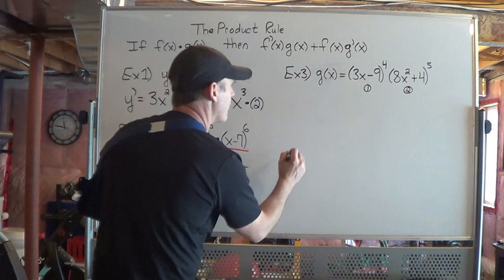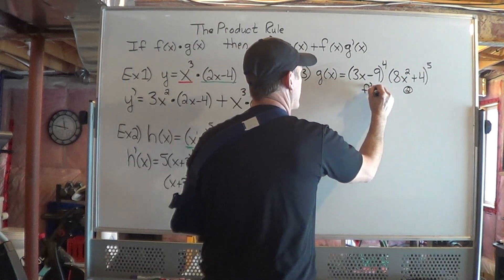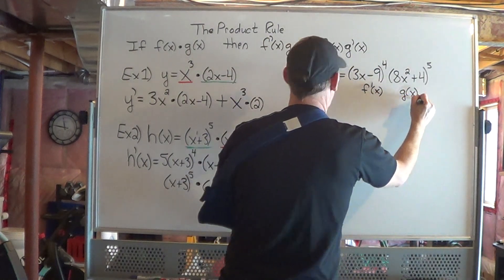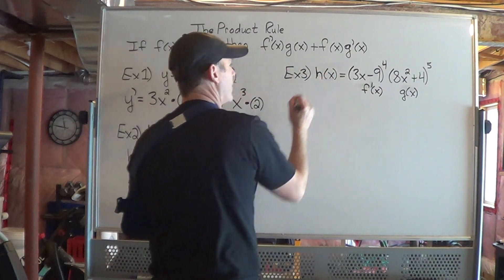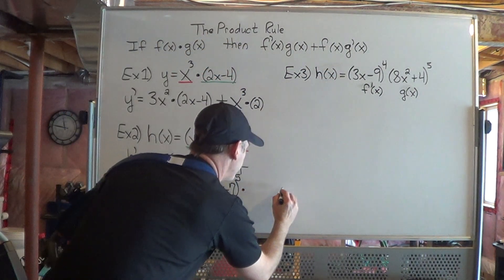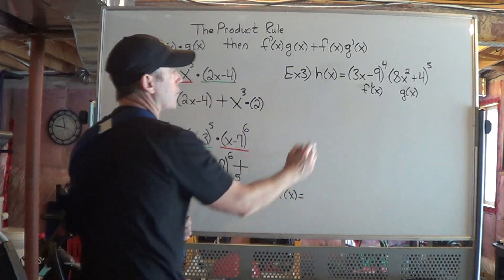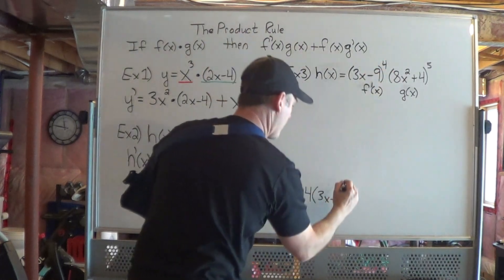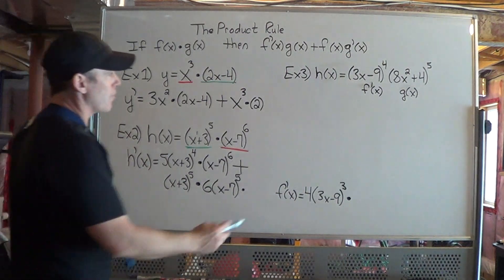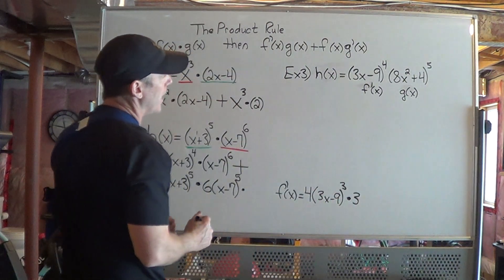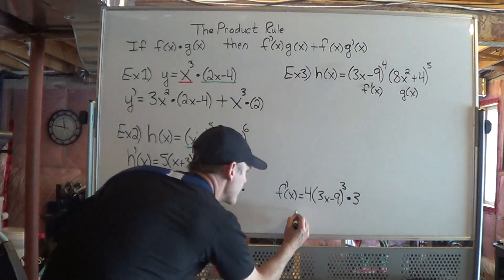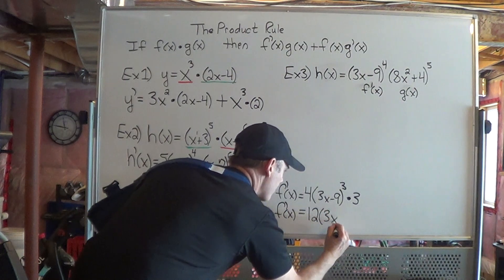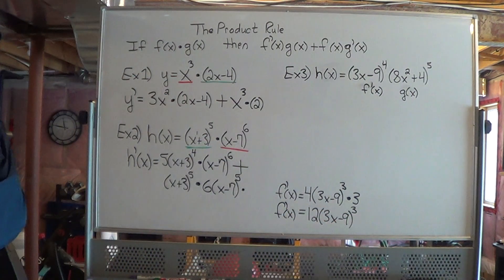So for f prime of x: f of x is 3x minus 9 to the power of 4. I bring the 4 down, I have 3x minus 9 to the power of 3, then times the derivative of the inside. The derivative of 3x is 3, and the derivative of negative 9 is 0. So 3 times 4 gives us 12 out front. f prime of x equals 12 times 3x minus 9 to the power of 3. I've now found the derivative of the first part, so when I do the product rule I can just plug it in.